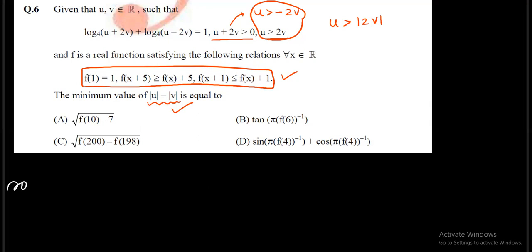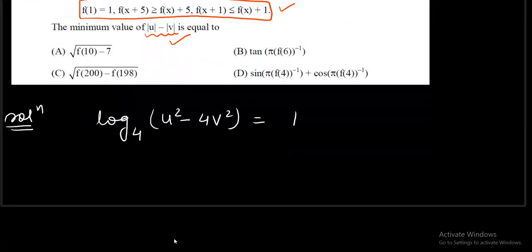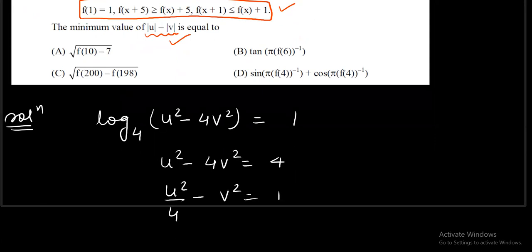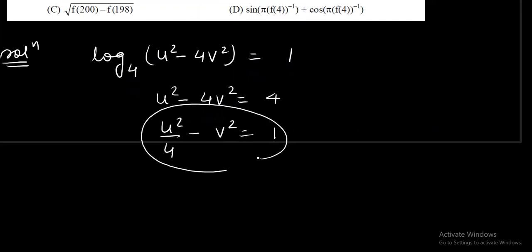Let's start with |u| − |v|. Since u and v are involved in the first equation, I am going to rewrite it using the properties of logarithms. I write it as log base 4 of (u² − 4v²) = 1. From this we get u² − 4v² = 4. Dividing both sides by 4 gives an equation that resembles the equation of a hyperbola: x²/a² − y²/b² = 1.